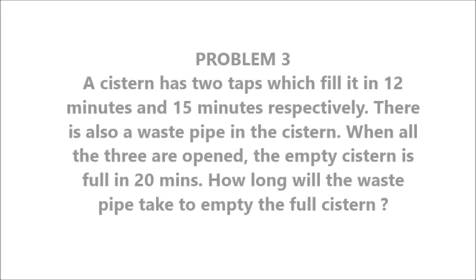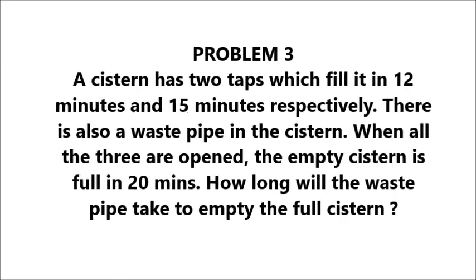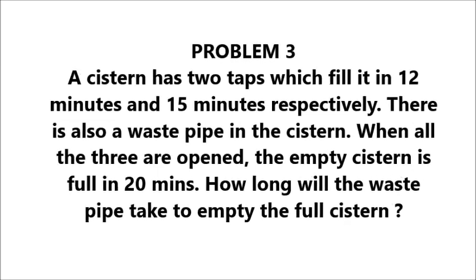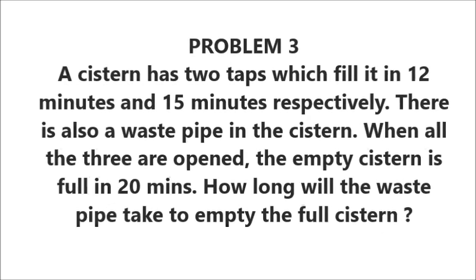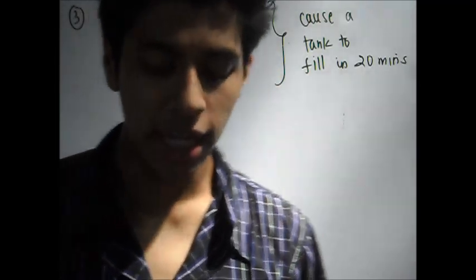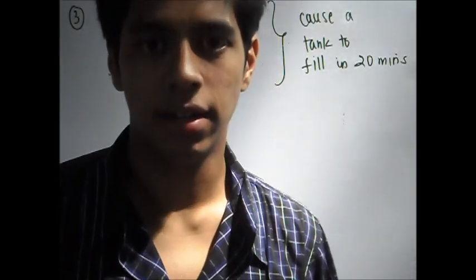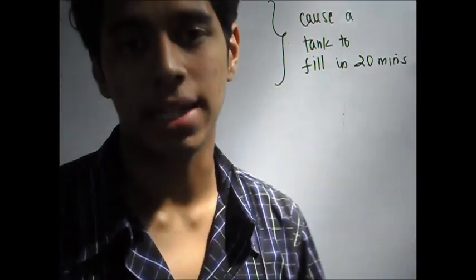Now let's move on to the third problem. Problem 3: A cistern has two taps which fill it in 12 minutes and 15 minutes respectively. There is also a waste pipe in the cistern. When all the three are opened, the empty cistern is full in 20 minutes. How long will the waste pipe take to empty the full cistern? Now in problem 3, they said that three pipes are activated. Two of them are inlet and one of them is an outlet. When they all work together, they fill the tank in 20 minutes.